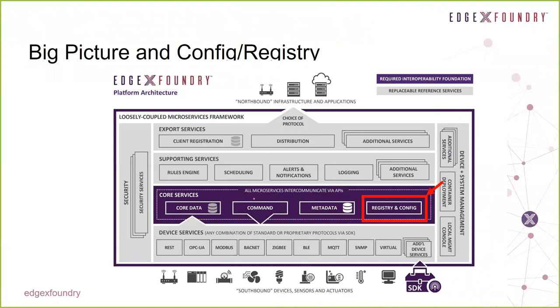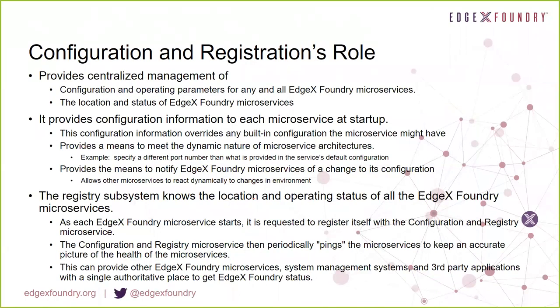We've called it the registry and config service, sometimes the CNR service. It's the first up of all the microservices, at least in any production environment — this one comes up first and all other services check in with it. When you're doing things like Docker work or using Docker to run EdgeX, you'll see as part of the Docker Compose file that this is the first one out of the chute.